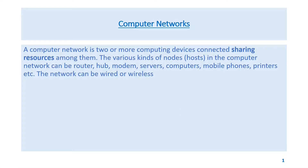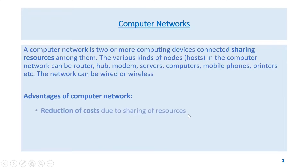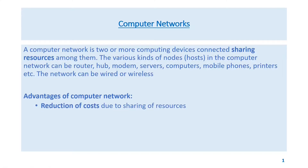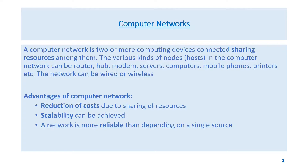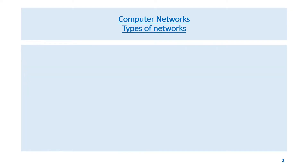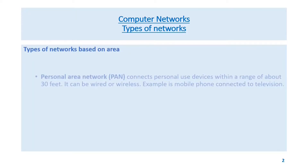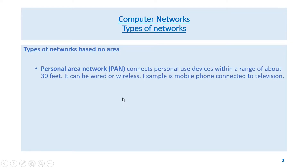Nodes can also include computers, mobile phones, printers, etc. The network can be wired or wireless. Advantages of computer networks include reduction of cost due to sharing of resources, improved availability, and a network is more reliable than depending on a single source. Information is also easily accessible.